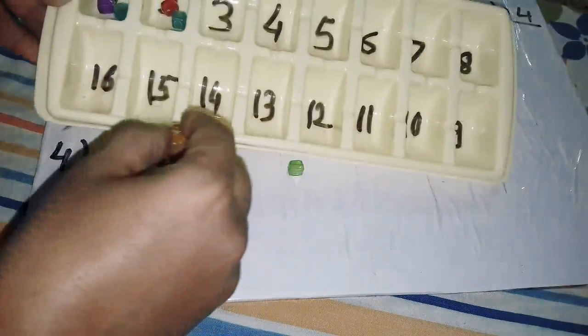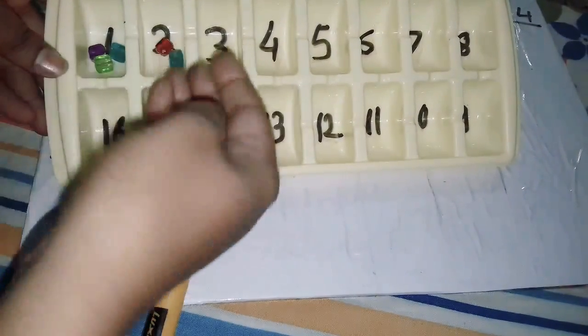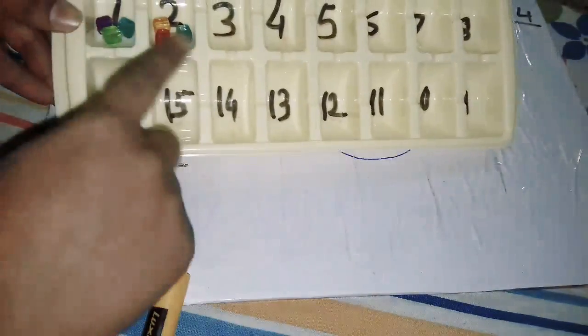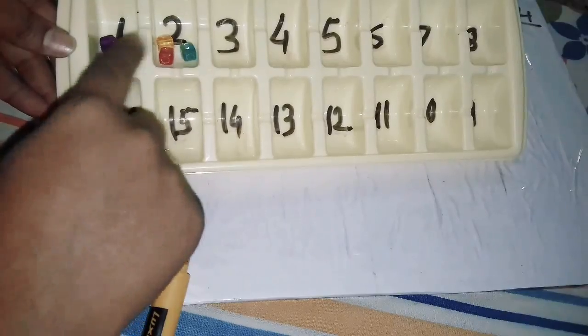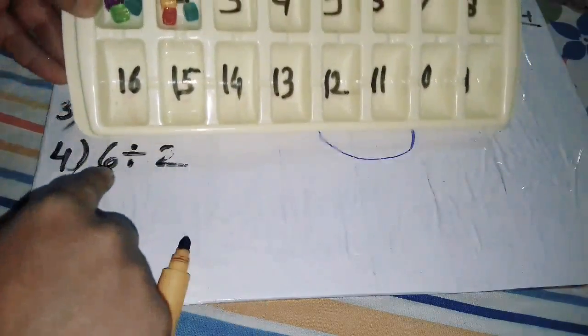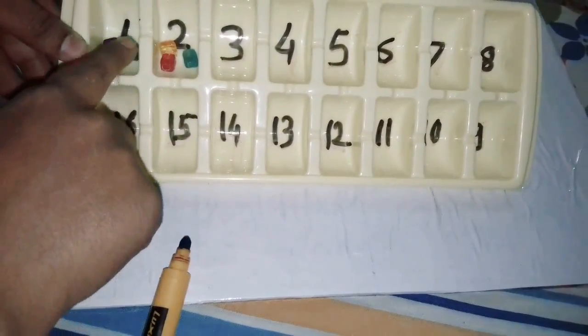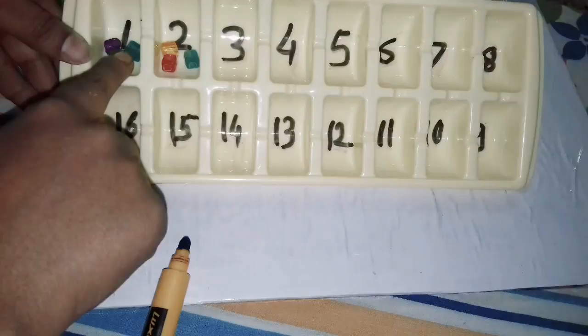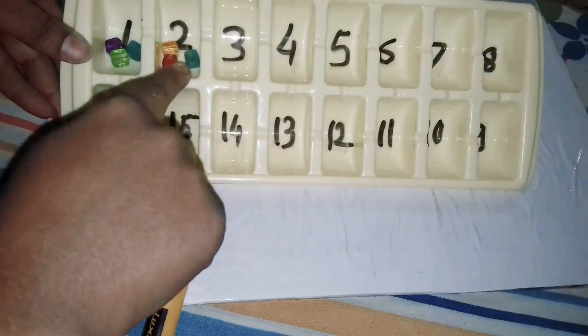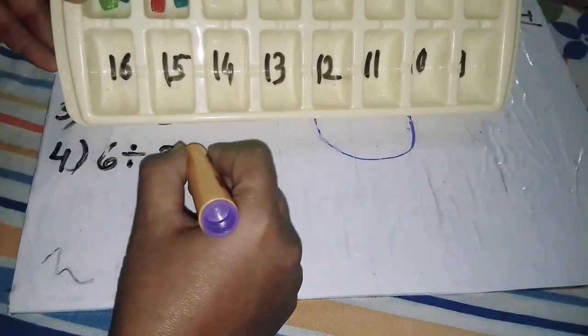Again, only 2. Finished! The 6 beads are finished and they are in only 2 compartments because our question is 6 divided by 2. In one compartment there are 3 beads. What will be the answer? 6 divided by 2 is equal to 3.